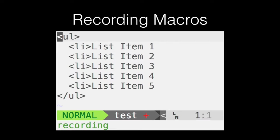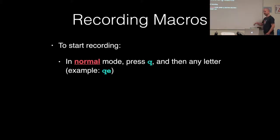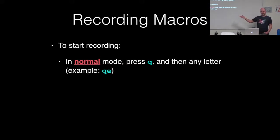Hopefully macros are a pretty simple concept to wrap your head around, but the question is: once you know what macros are, how do you get them? If you're anything like me, you may have occasionally seen this recording message at the bottom of Vim, which for a long time freaked me out because I had no idea what was going on. I would frequently just exit out of Vim. It turns out what you were doing was actually recording a macro, and it's really easy to get started. All you have to do is press Q in normal mode and then some arbitrary letter — in this case E — and that puts you in recording mode. That's when the recording message shows up.